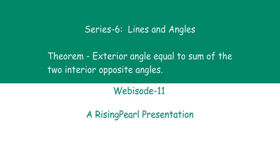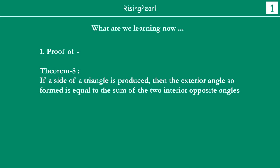Hello friends, welcome to this presentation from Rising Pearl. I am your host, your friend Roy. We are talking about Series 6, which is Lines and Angles. This is episode number 11, and today we have proof that the exterior angle is equal to the sum of two interior opposite angles.